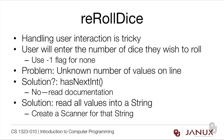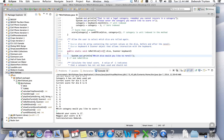Looking at hasNextInt in the Scanner class — it returns true if the next token in the scanner's input can be interpreted as an int value in the default radix. The scanner does not advance past any input. The problem with using hasNextInt is that it will wait to see what the next value is, and the next value occurs later in the program — so this will actually hang your program if you try to use nextInt. So we need a clever workaround.